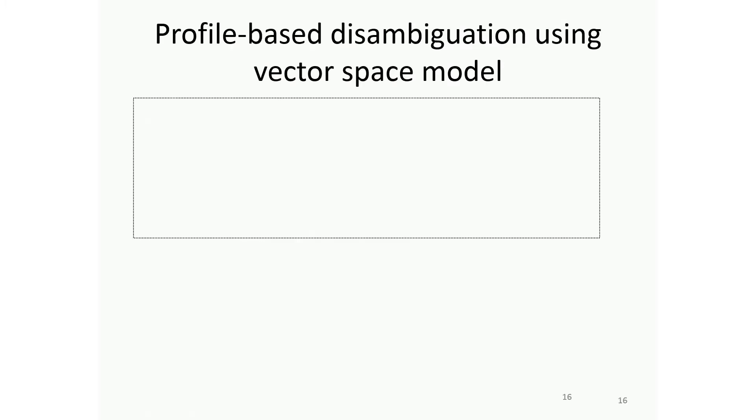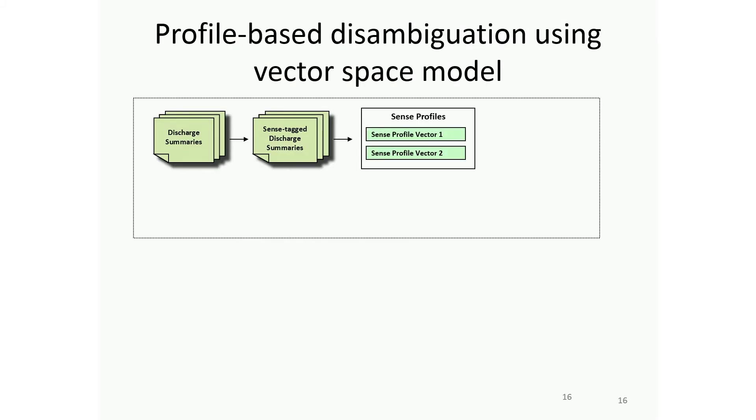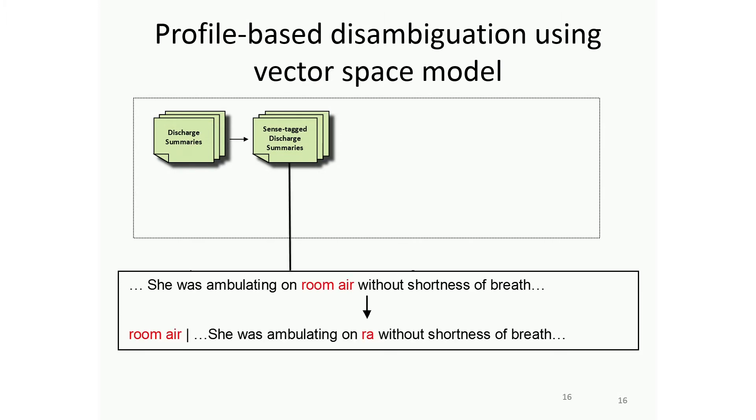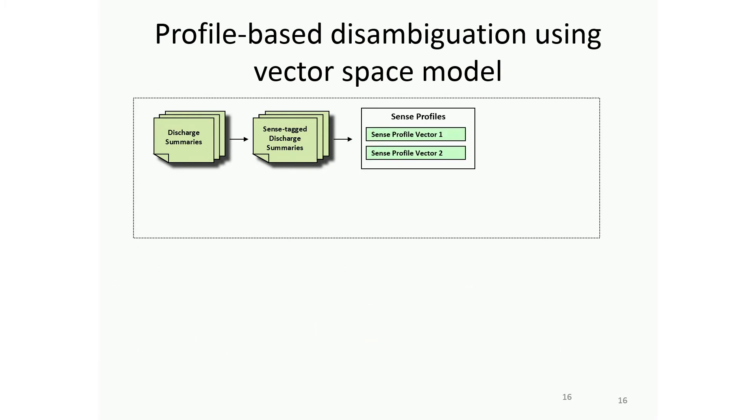I have very simple slides to show how one method we did to do the disambiguation. We find discharge summary notes, then we try to automate it to create what we call pseudo-annotated datasets. Otherwise, you have to have humans annotate, which is very costly. What we do is we find the long form. If we see room air, we replace it with RA and label this sentence so the meaning is room air. That's how we create that pseudo-annotated corpus. From there, we train a model so for each sense we have a profile.